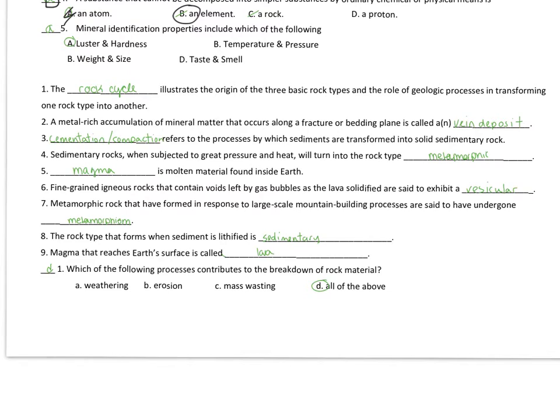Which of the following processes contributes to the breakdown of rock material? The breakdown of rock material would be weathering. Weathering, and I'm correcting this work as we go. I want to emphasize, though, that erosion and mass wasting are how you're going to transport this material. Mass wasting because of gravity, and erosion because of wind, water, or ice.